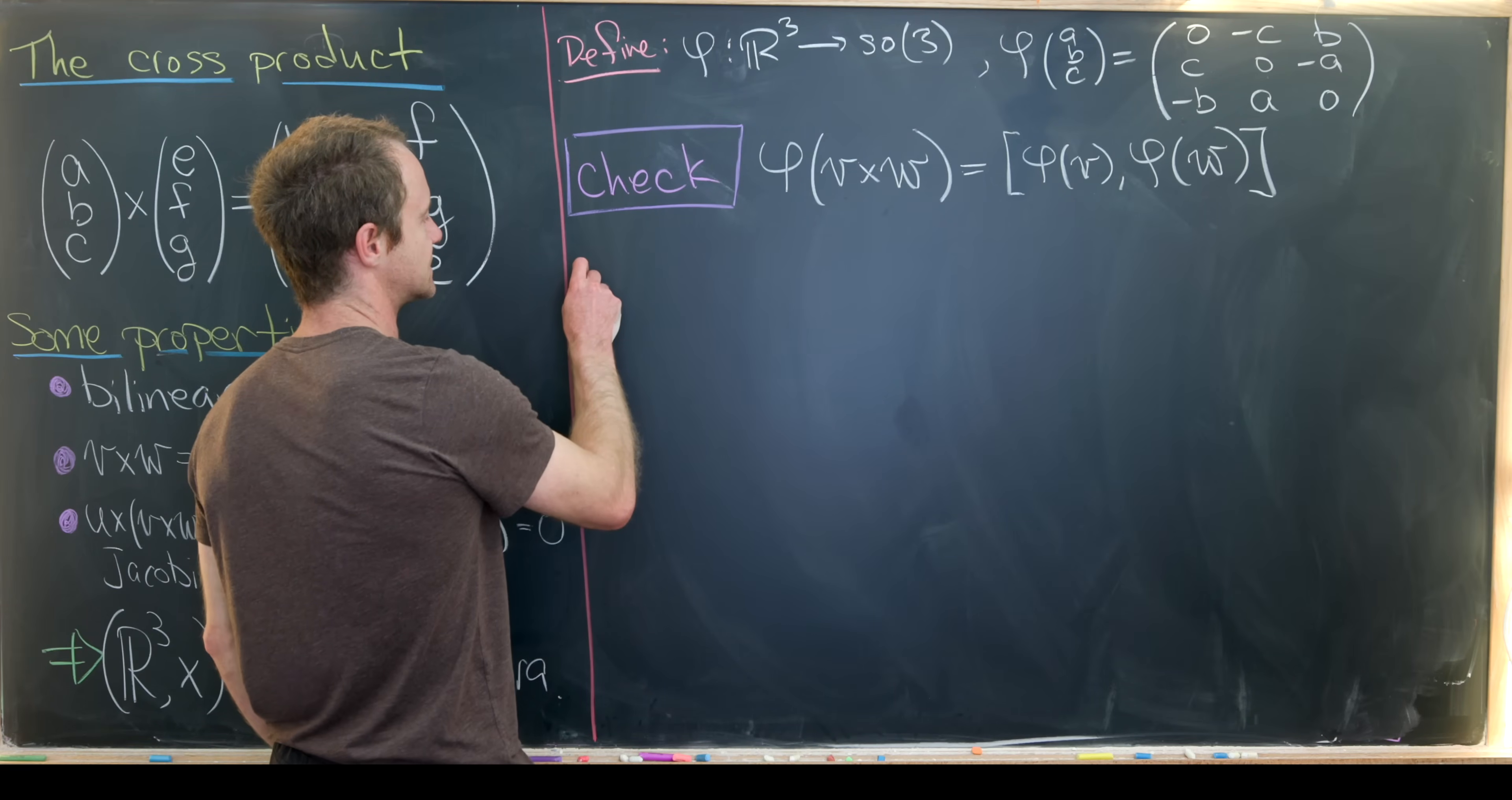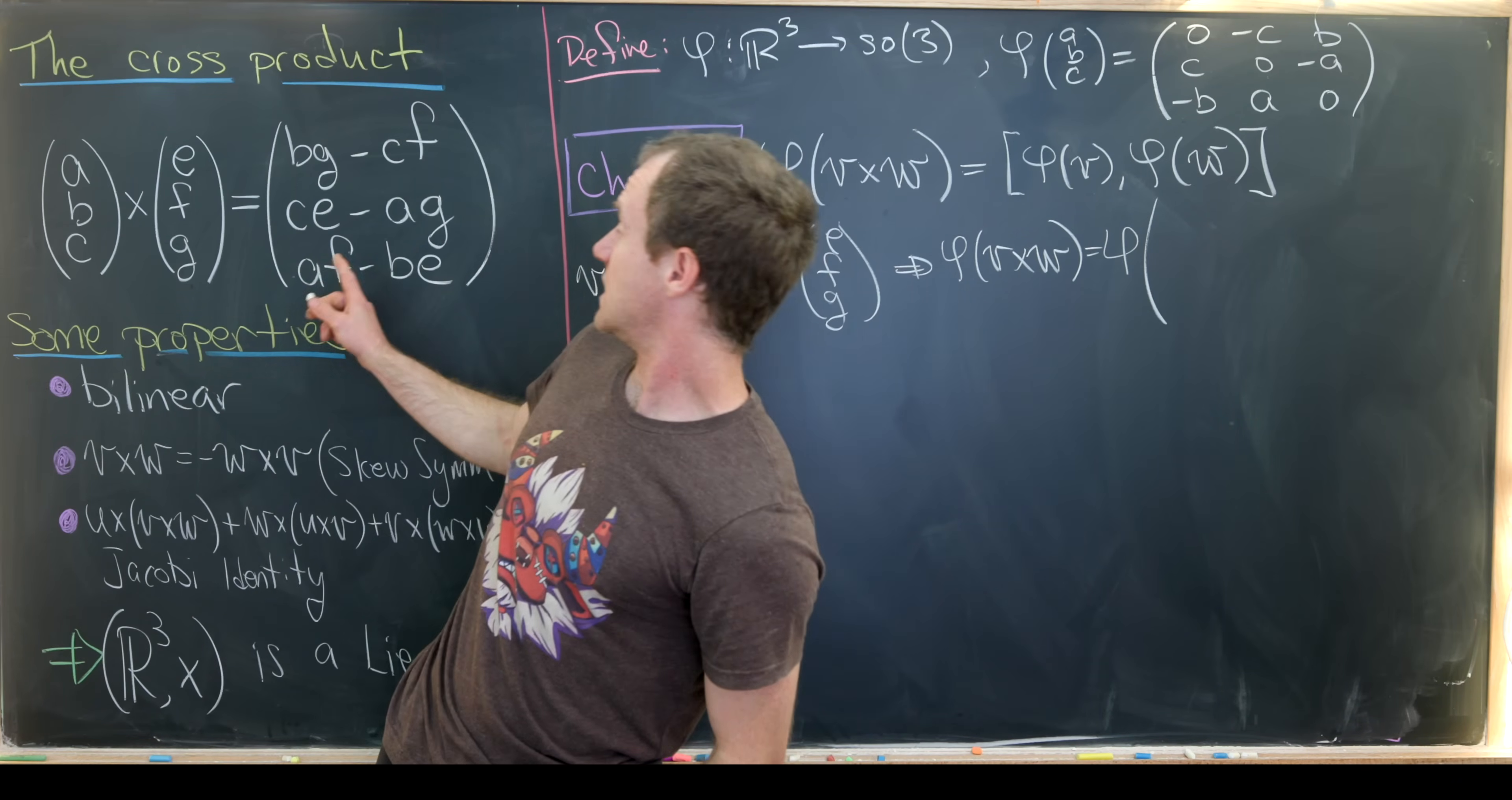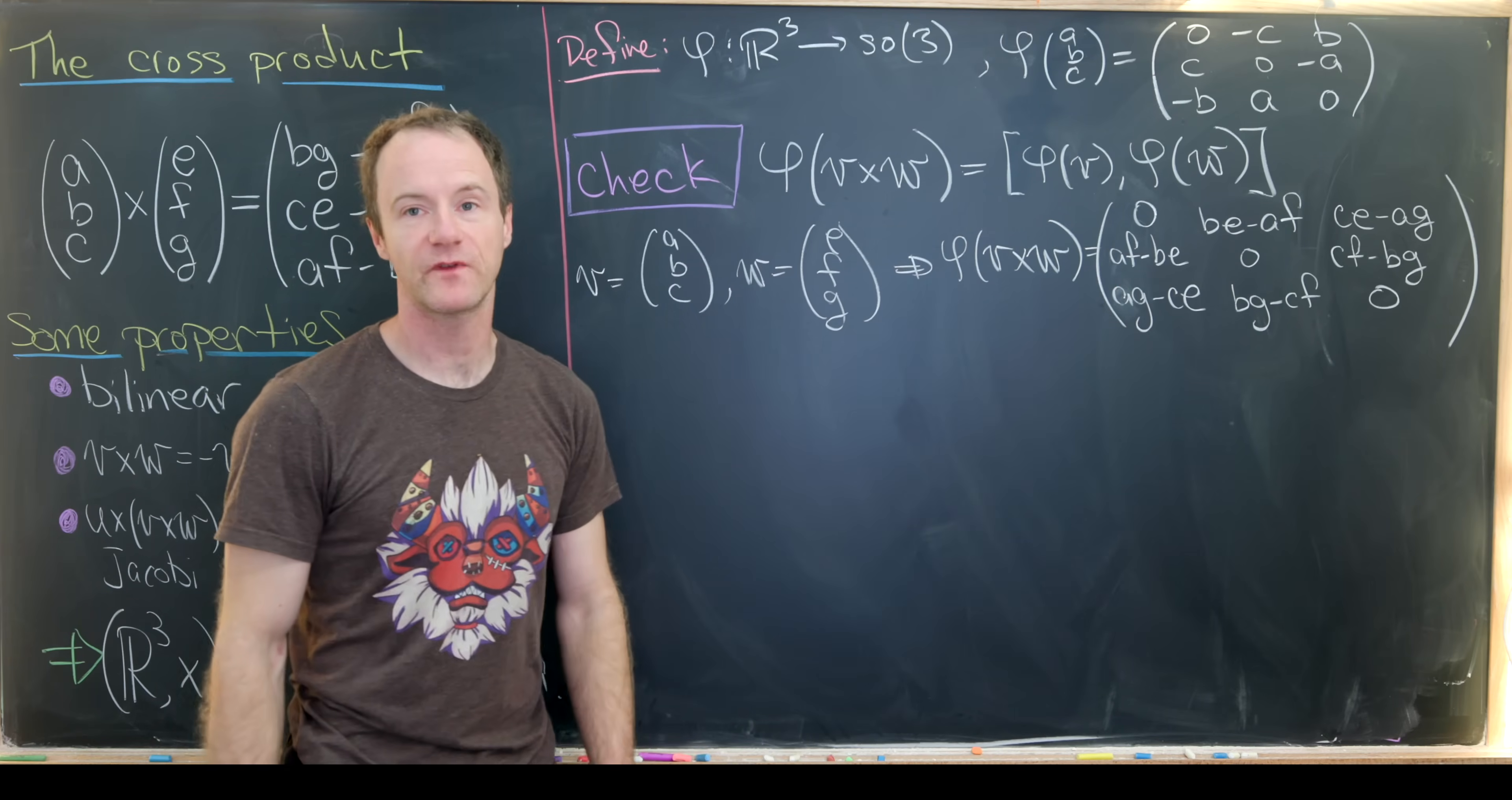So let's say V is equal to our vector ABC. Let's say W is equal to our vector EFG. So that means that phi of V cross W will be equal to phi of... Well, we need to use this formula over here for V cross W. So we have BG minus CF, CE minus AG, AF minus BE. So now let's quickly replace that with the appropriate 3 by 3 matrix.